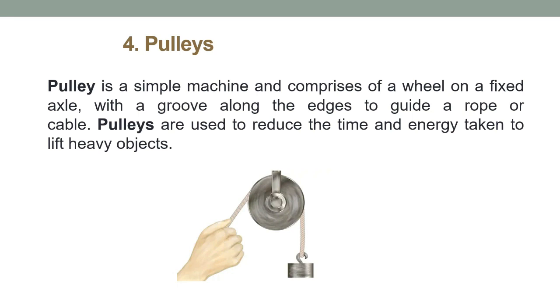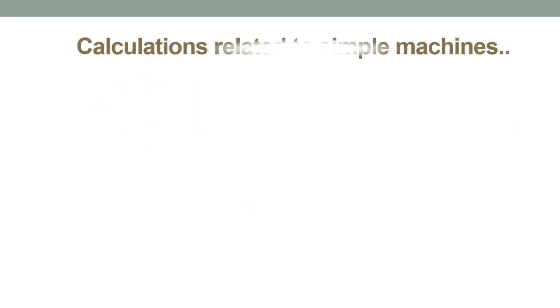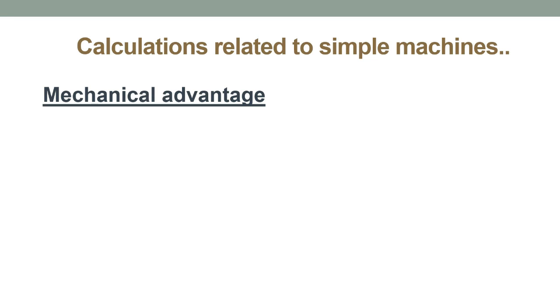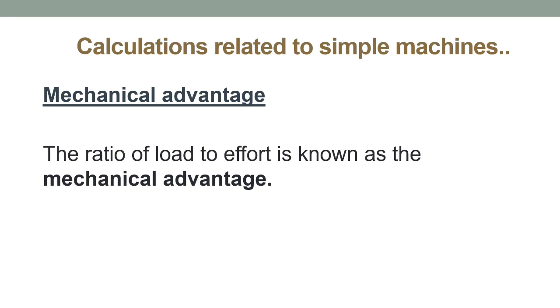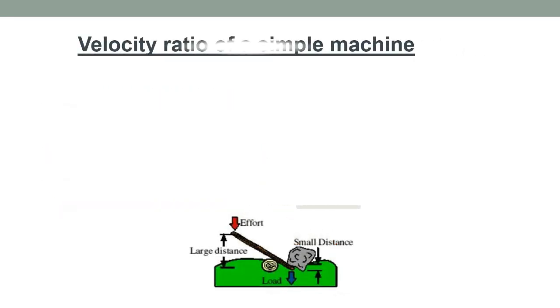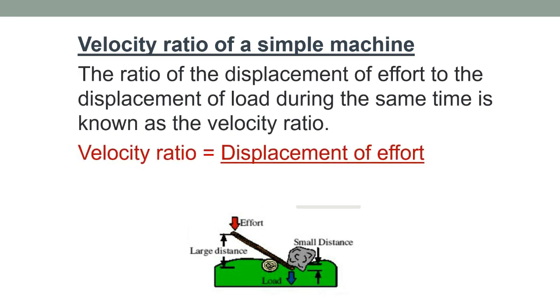You are given a calculation part related to simple machines in your textbook. Here I am going to teach you only the equations related to calculations in simple machines. The first equation is on mechanical advantage. To find the mechanical advantage of a simple machine, you have to divide the load by the effort. The next equation is on velocity ratio. To find the velocity ratio, you have to divide the displacement of effort by the displacement of the load.